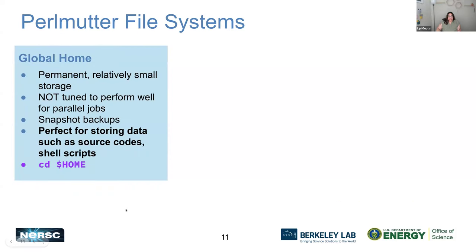The home directory is permanent — we don't purge or delete things — but it's really small: 40 gigabytes of space. It's not tuned for performance. 40 gigabytes is really small when you're doing simulations. You do not want to keep your big data files or run things out of this home directory because it'll fill up, and if it does, your job will crash. It's really just for shell scripts or source code — small things you want to keep handy.